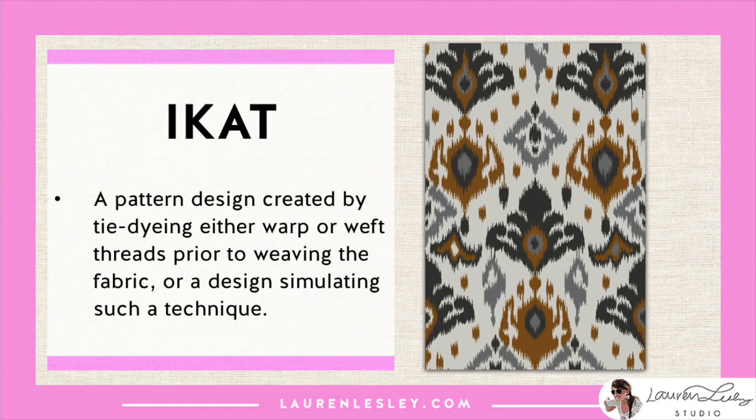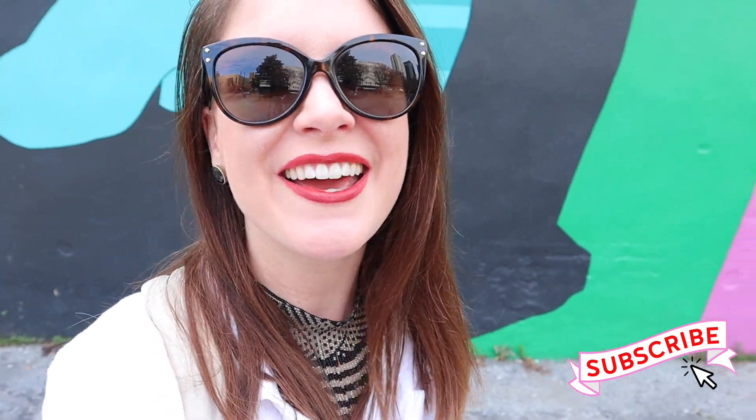Ikat is another type of pattern, created by tie-dying either the warp or the weft - the two yarns used to create woven textiles - prior to weaving the fabric. It can also be a design simulating this technique. It has a kind of global look with a zigzag quality to it, almost like a heart monitor.